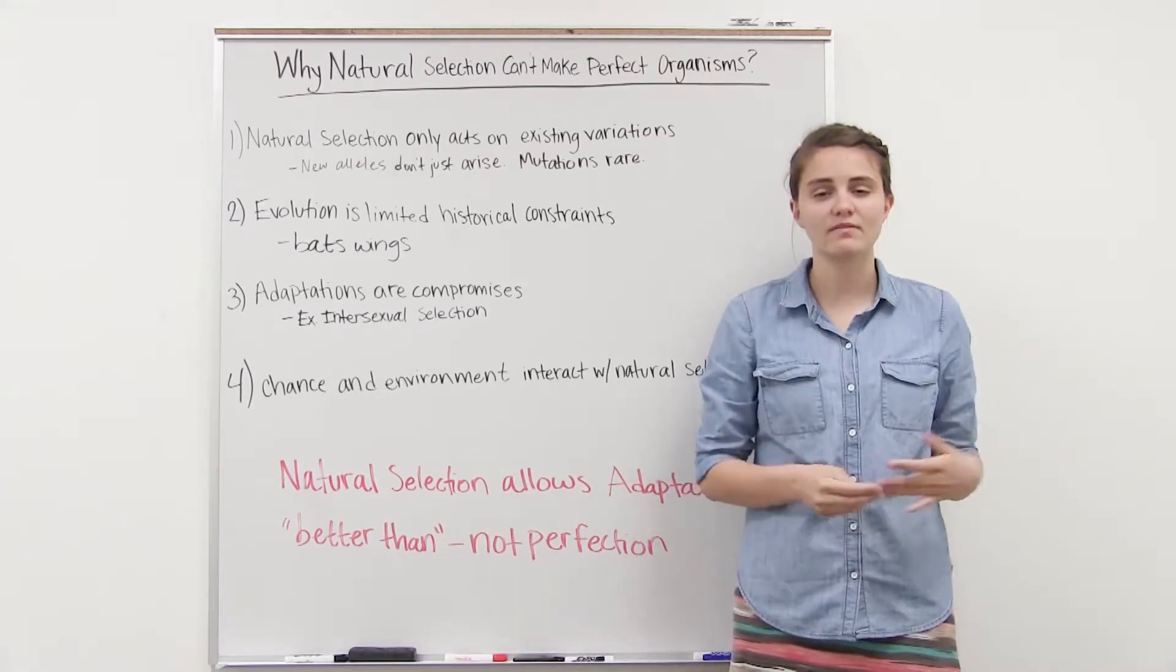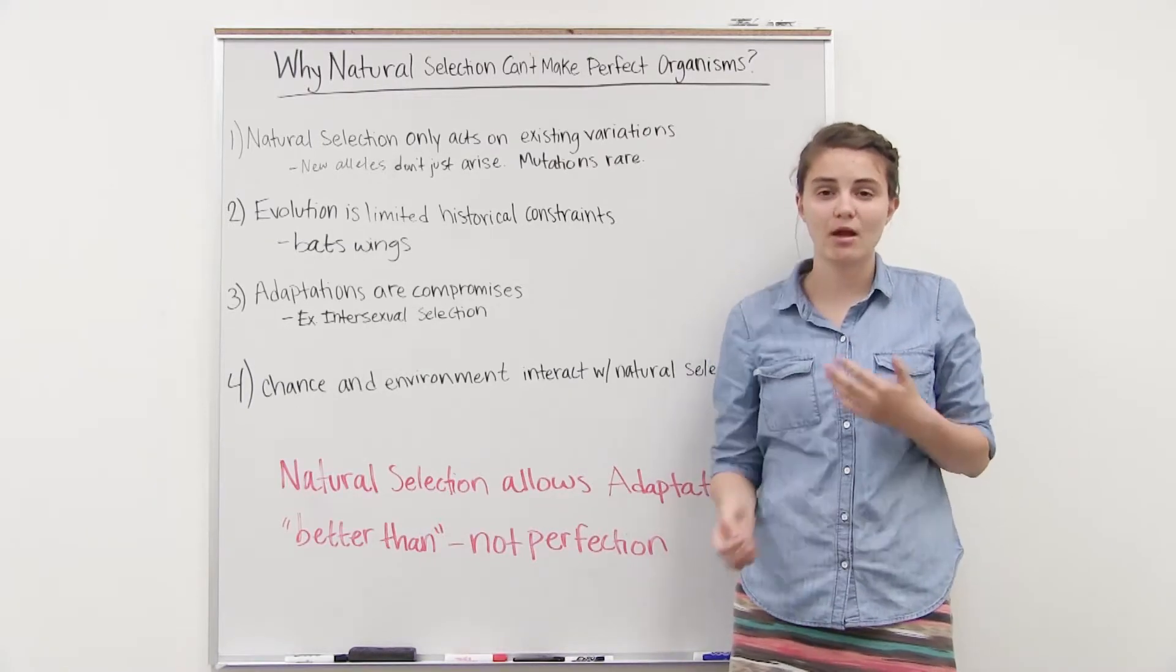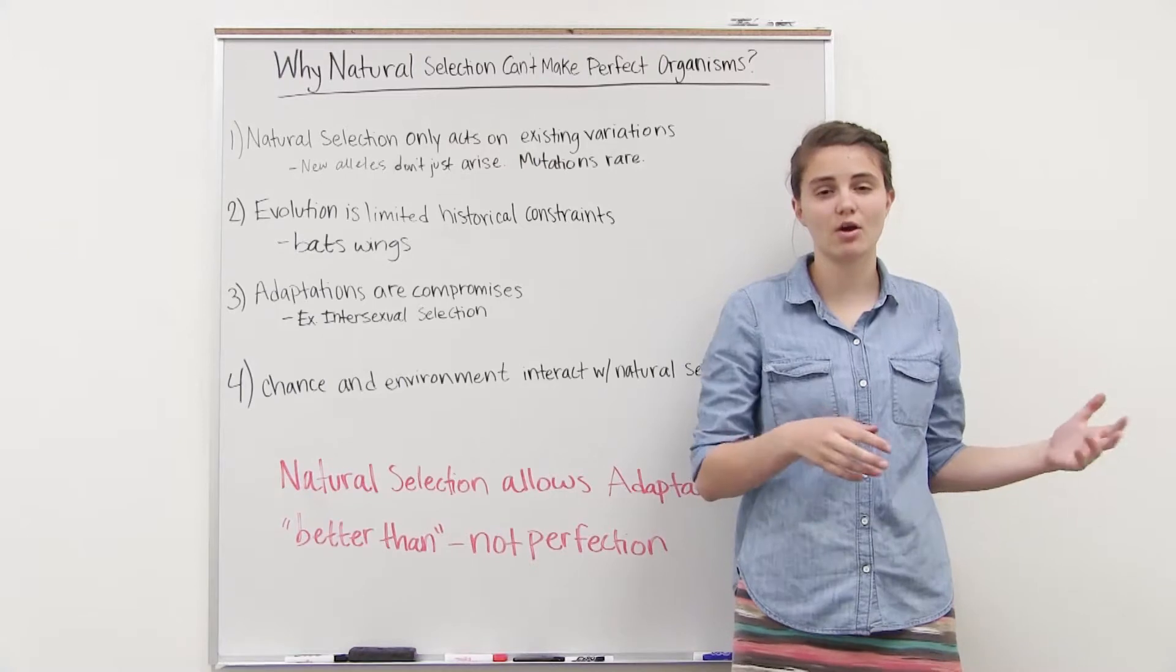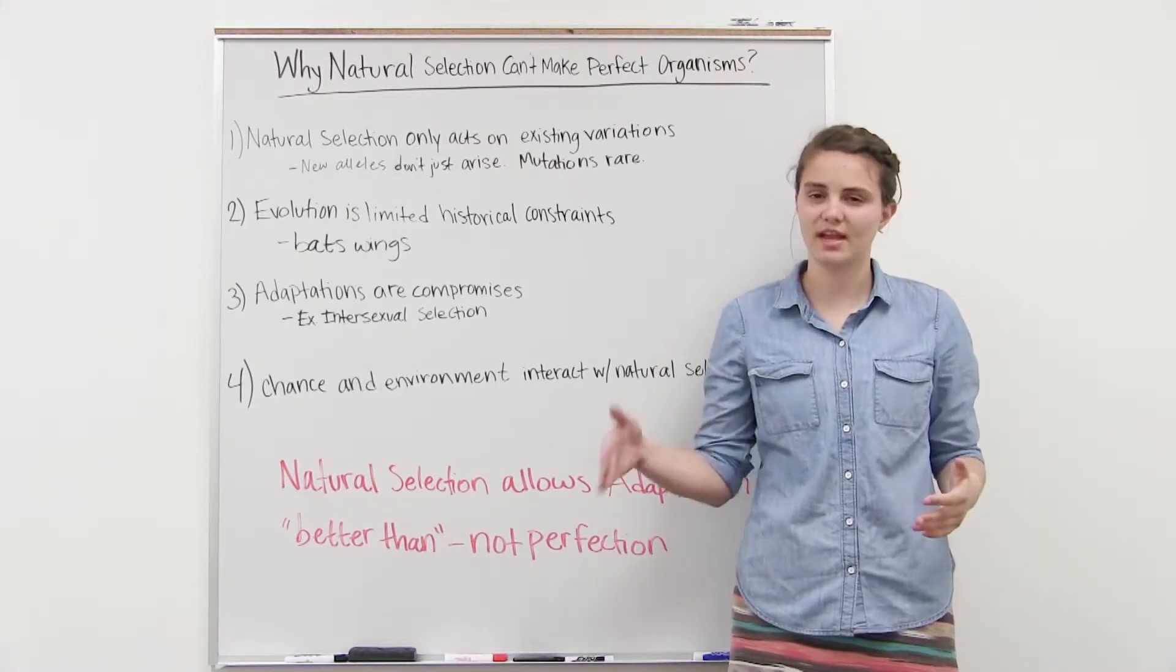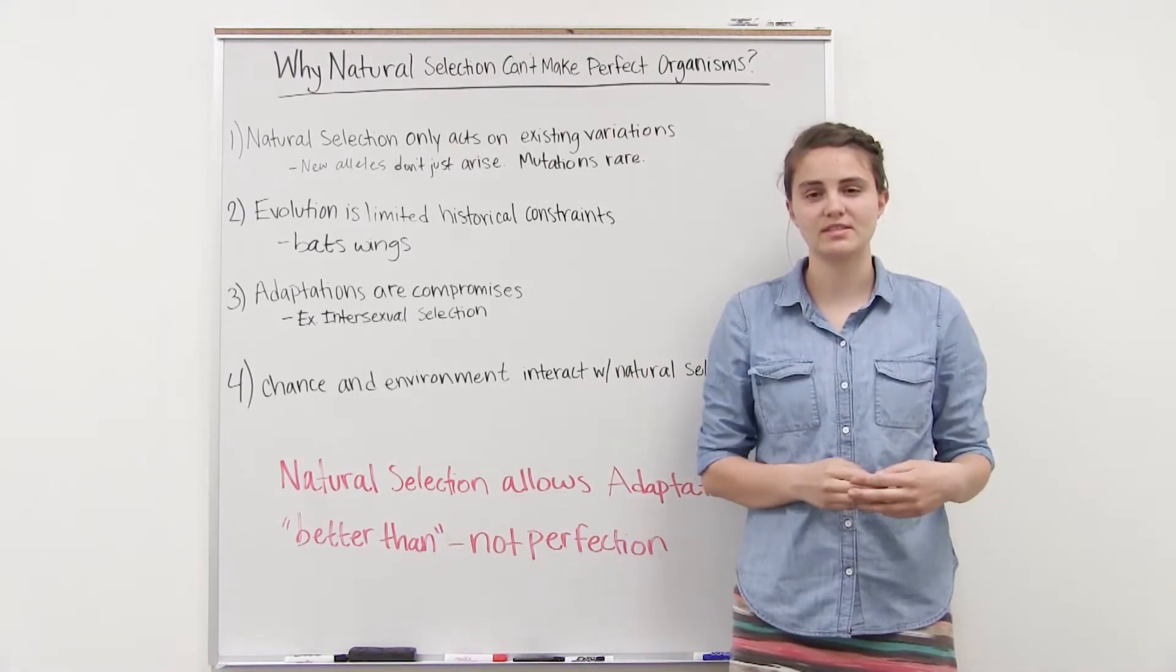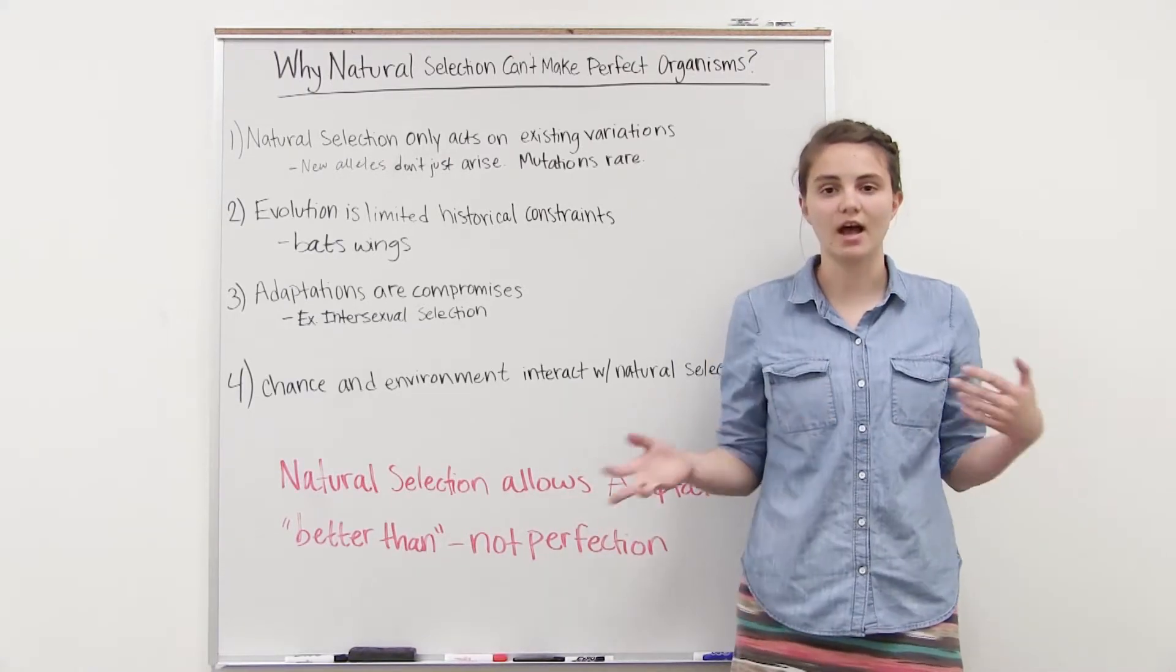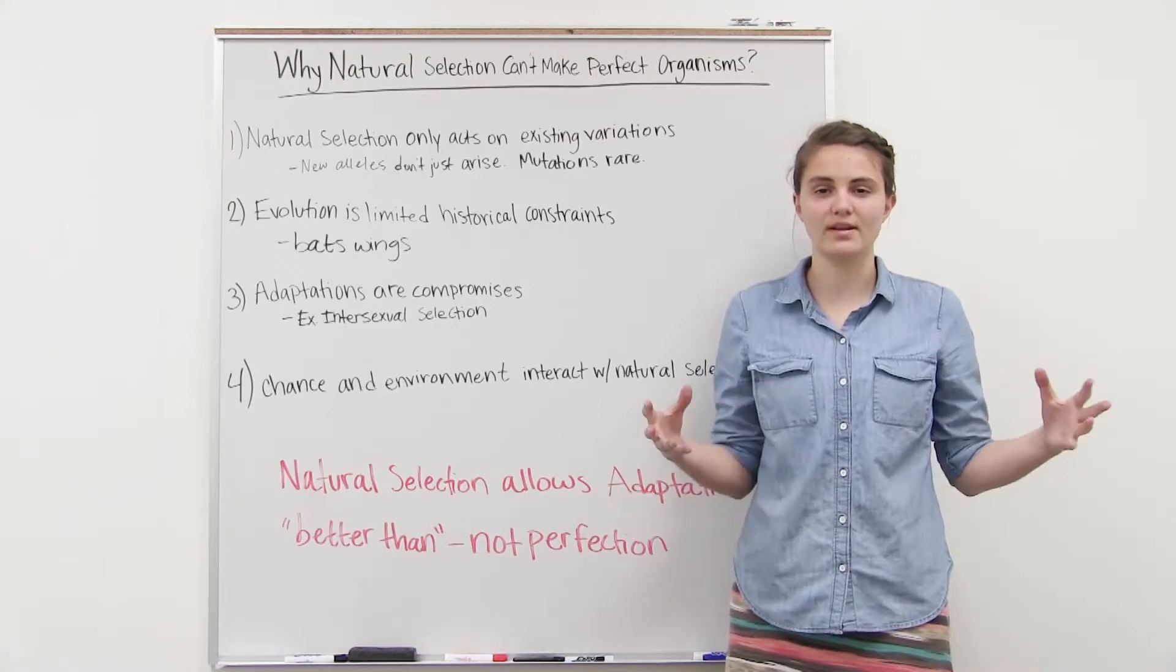And also the environment. Our environments are constantly changing. So what once was beneficial is now no longer beneficial. And so now the populations have these old traits that used to be beneficial and now natural selection is changing them. And so that's why we look at some organisms in their environment and they're not perfect, just because it's a constant dynamic process of what is most beneficial.